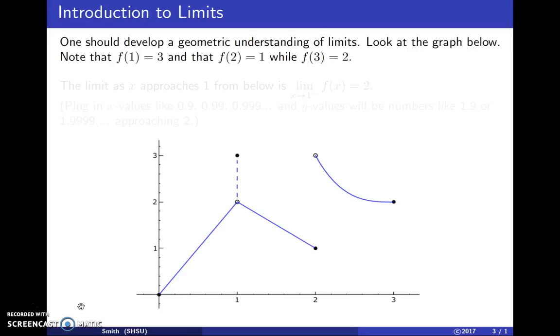And if you plug in three into this function, over on the right side, you'll see that when x is three, the y value is two. That's the black dot at (3,2).